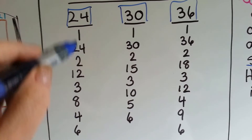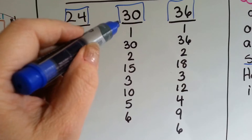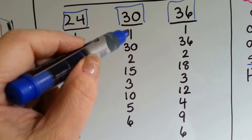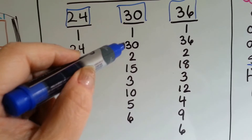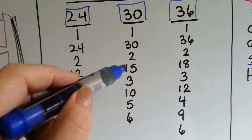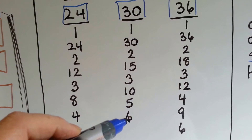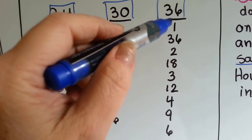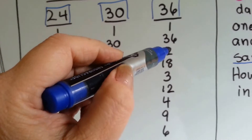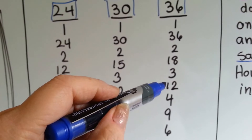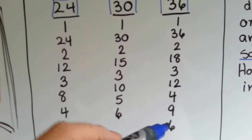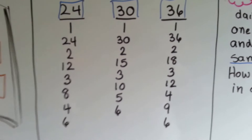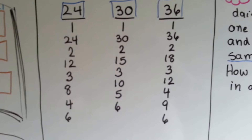Now the factors of 30: 1 times 30, 2 times 15, 3 times 10, and 5 times 6. And the factors of 36: 1 times 36, 2 times 18, 3 times 12, 4 times 9, and 6 times 6. Now we need to figure out which factors they all have in common.